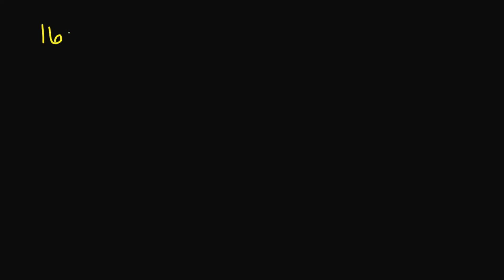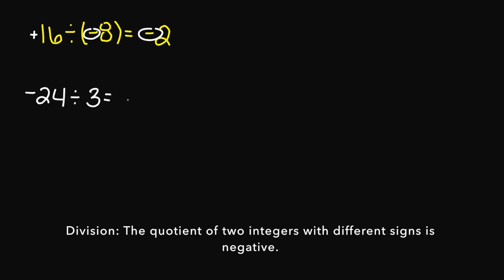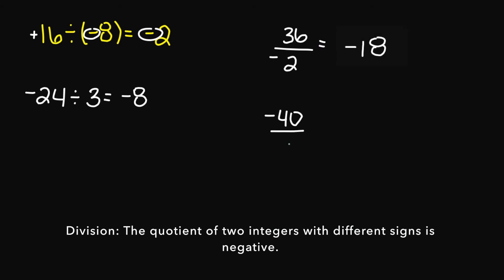So let's say we had 16 divided by negative 8 — this is going to give me a negative 2. So the quotient of two integers with different signs, you're going to get a negative answer. We have a positive 16 and a negative 8. Since I have two different signs, your answer is going to be negative. So if you had negative 24 divided by 3, your answer is going to be negative 8. 36 divided by negative 2 gives negative 18. Negative 40 divided by 8 gives negative 5.